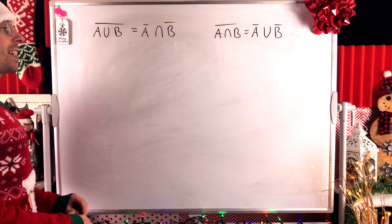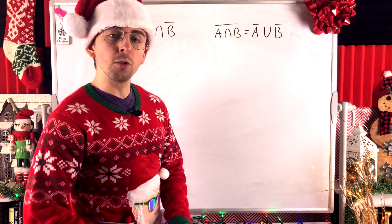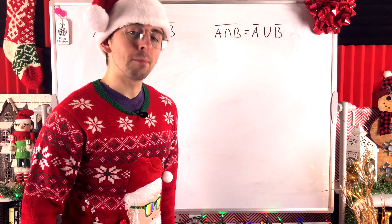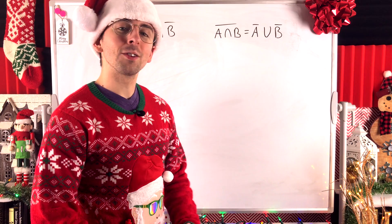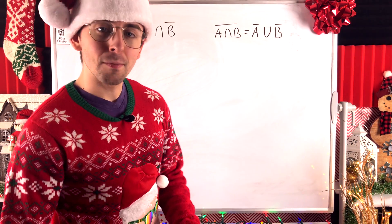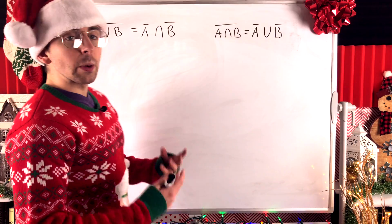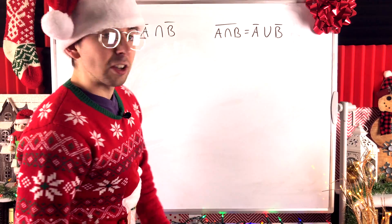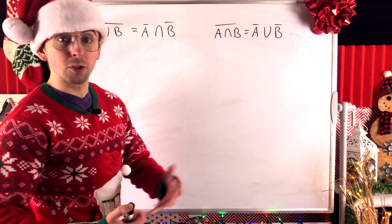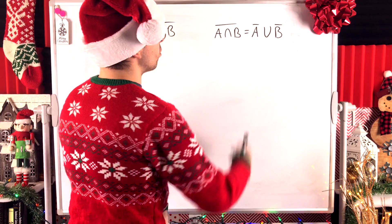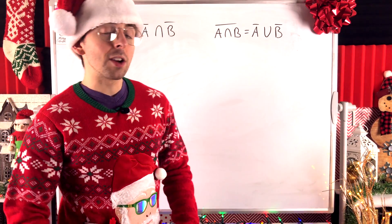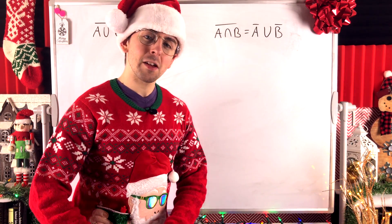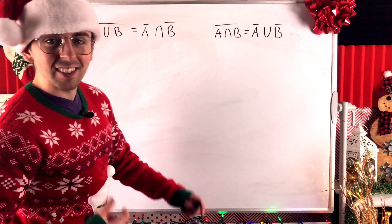If it's not immediately apparent why these equalities are true, I encourage you to represent these sets with Venn diagrams and you'll quickly see that they are true. But of course, nothing will convince you quite like a nice proof. To prove both of these equalities, we're going to use what's often called double inclusion — just proving that these two sets are subsets of each other. So by definition, the two sets are equal. Both proofs proceed by applying definitions over and over again, so I encourage you to give them a try yourself before watching the rest of the lesson.